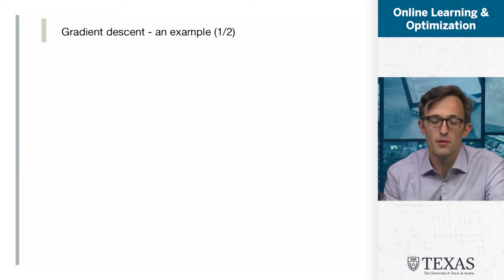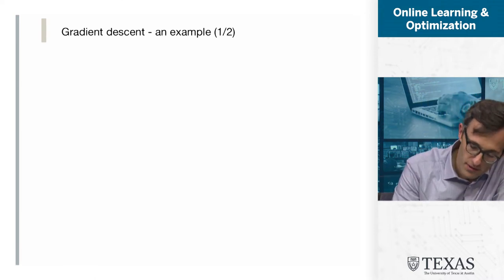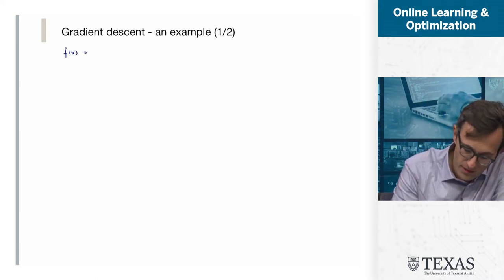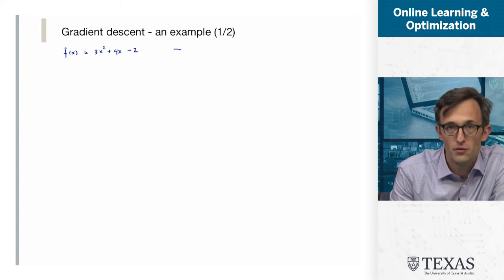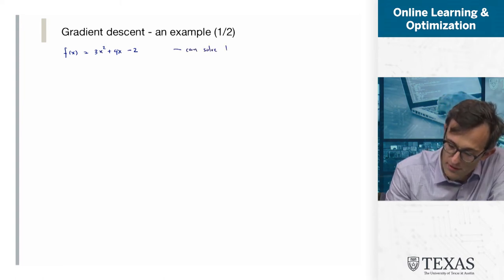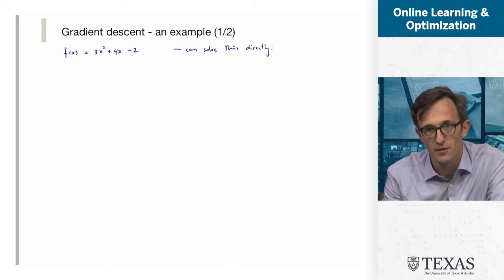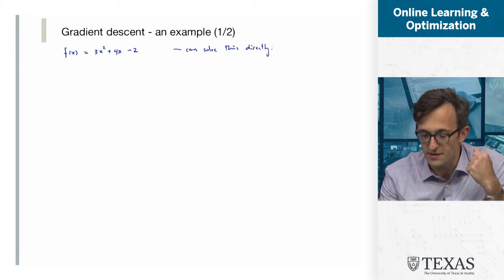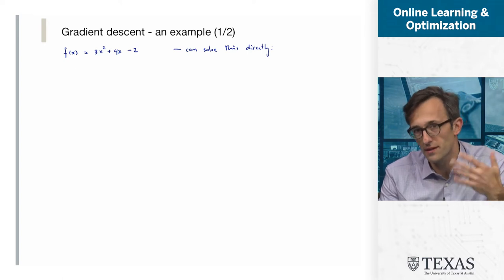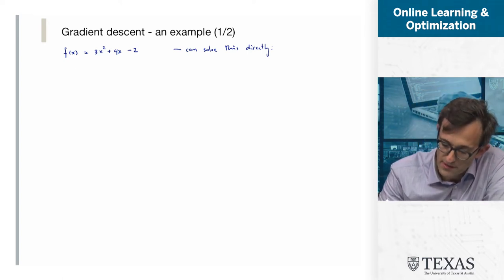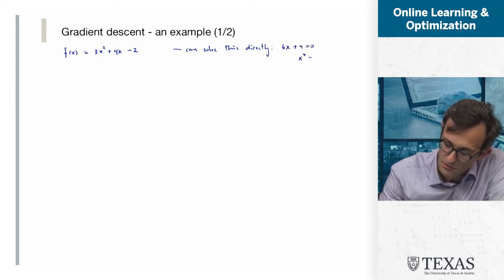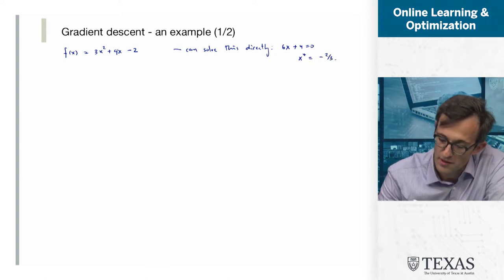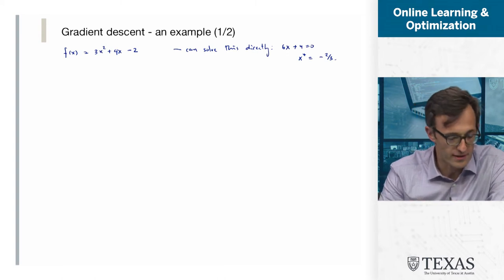Let's see gradient descent in action for a very simple example that we know how to solve using other methods. Consider f(x) = 3x² + 4x − 2. We could solve this exactly by taking the derivative, setting it equal to 0, and finding that the optimal solution x* equals −4/6, which is −2/3. But we're not interested in solving simple problems like this — this is just to illustrate how gradient descent performs and give us intuition.